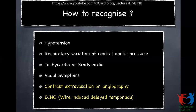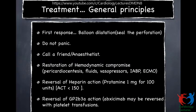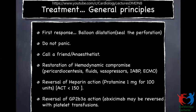When you have a delayed wire-induced cardiac tamponade, echo should guide you to understand that you have a perforation in the distal vessel that has led to hypotension. In general, the treatment principles: the first response when you have a coronary perforation is to seal the perforation. You do a balloon dilatation to try to seal the perforation so that you do not have leak into the pericardium, cardiac tamponade, and hypotension. As Matthew has said, do not panic. Immediately get assistance from a colleague. You need an anesthetist and someone who can help with echocardiogram. Try to restore hemodynamic stability and start pericardiocentesis.